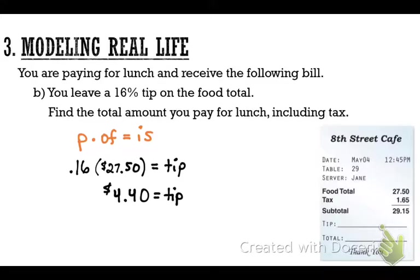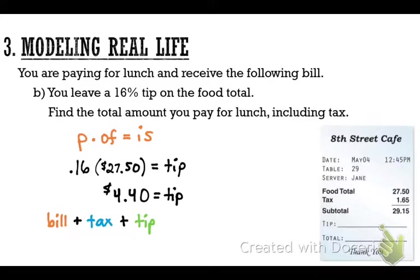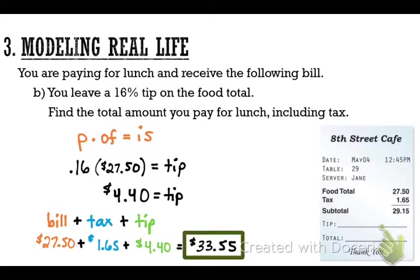That tip isn't the final answer — the question asks for the total including tax and tip. Add the food total ($27.50), plus tax ($1.65), plus tip ($4.40). The total is $33.55.